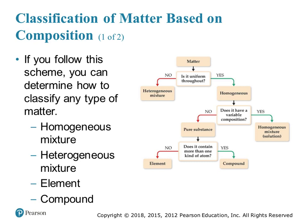We can also classify matter based on composition. The first thing you ask yourself is: is the sample that you're looking at uniform throughout? If it's uniform throughout, then it is considered homogeneous — the prefix homo means same. If it is not uniform throughout, then it is a heterogeneous mixture. An example of a heterogeneous mixture might be chocolate chip cookie dough — you're not guaranteed to get the same amount of chips in every spoon of dough.